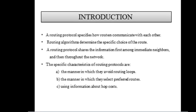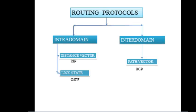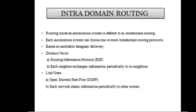A routing protocol specifies how routers communicate with each other. Routing algorithms determine the specific choice of route. A routing protocol shares information first among immediate neighbors and then throughout the network. Specific characteristics include: (a) the manner in which they avoid routing loops, (b) the manner in which they select preferred routes, and (c) routing protocol use of information about hop cost. Routing protocols are classified as intra-domain and inter-domain. Intra-domain routing is further classified as distance vector routing and link state routing, whereas inter-domain routing is classified as path vector routing.